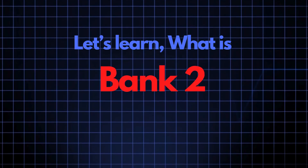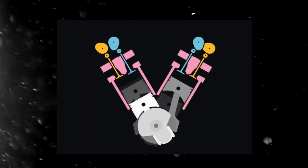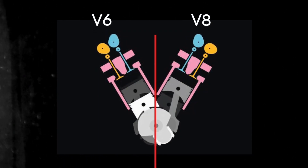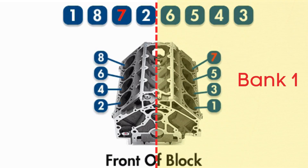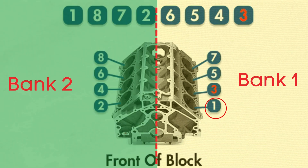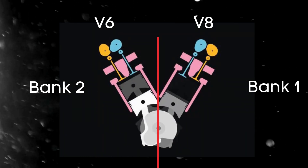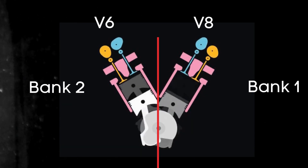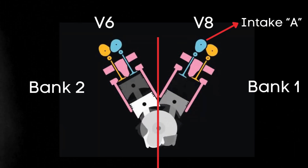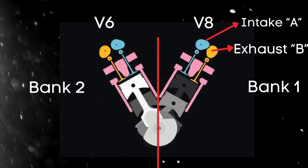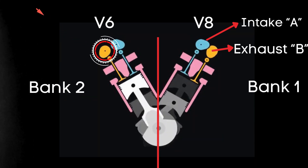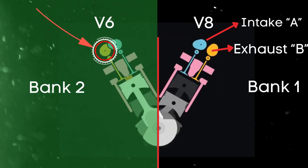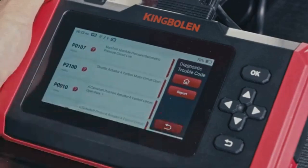Let's break down what the bank 2 exhaust camshaft actually is. In engines with multiple cylinder banks like V6 or V8 engines, you'll have two sides, or banks of cylinders. Bank 1 typically refers to the side of the engine where cylinder 1 is located, and bank 2 is on the opposite side. For engines with dual overhead camshafts (DOHC), each bank has two camshafts — one for intake valves and one for exhaust valves. So when we talk about the bank 2 exhaust camshaft, we're referring to the camshaft that controls the exhaust valves on the opposite side of the engine from where cylinder 1 is located.